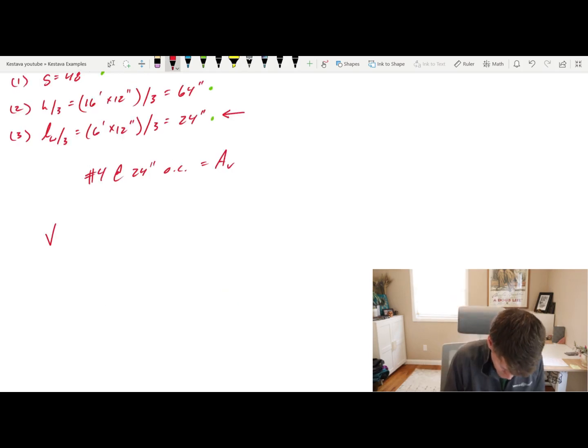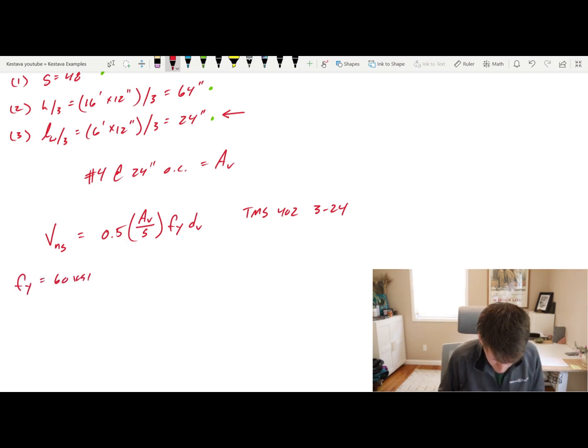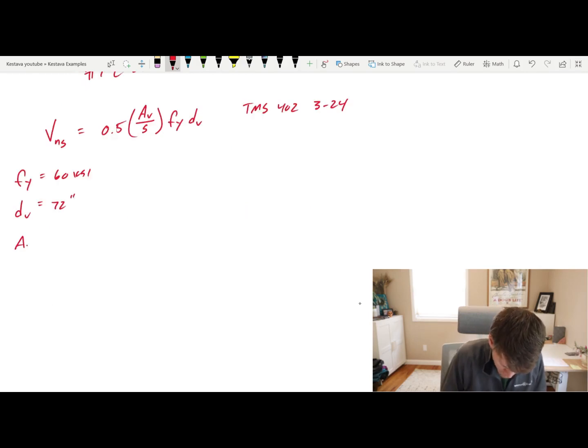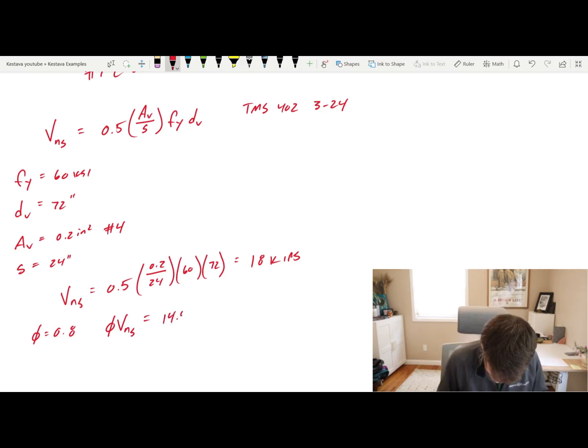Now let's determine VNS, which is the shear strength from our horizontal rebar. VNS is equal to 0.5*AV/S times Fy times DV. And this again is the TMS 402 equation 3-24. Fy, we took a peek at it above, 60 KSI steel standard rebar. DV again is the depth in the direction of your shear. So that's the length of wall. So six feet times 12 gets you 72 inches. And then AV is for just one of the bars. So 0.2 inches squared is a number four and our spacing is 24 inches. So that's everything we plug in that gets us 18 kips. And then phi is equal to 0.8. So phi*VNS is equal to 14.4 kips.